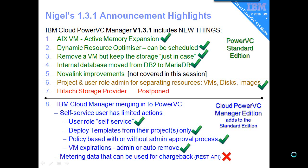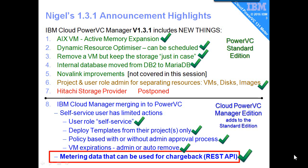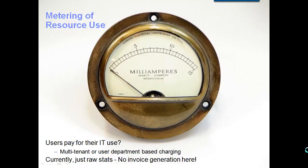We've been using this chart to track our progress through this series, parts 1 to 4. This is what we're going to do in part 5. We'll be looking at that metering data that can be used for chargeback. It warns us that it's a REST API, which is particularly tricky to use if you haven't done this sort of thing before.